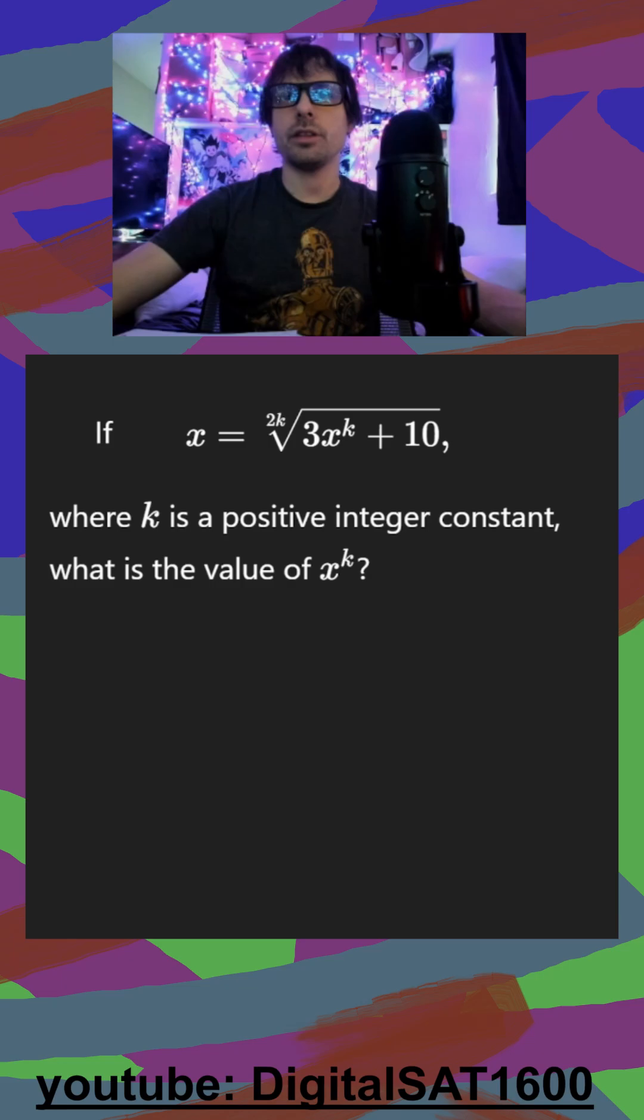So we always want to get rid of this radical. So I just raise both sides to whatever number is there. So it's going to be raising this to the 2k, raising this to the 2k.